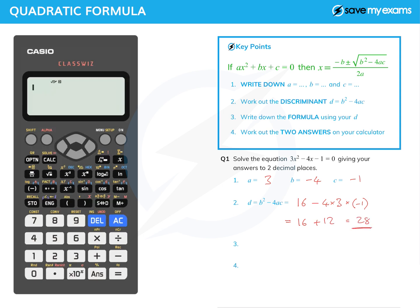Okay, so that's d. Now I'm going to write down the formula, which is x equals minus b. And again, being intelligent about this, b is minus 4, so minus b is plus 4. So here we go, 4 plus or minus the square root of 28.